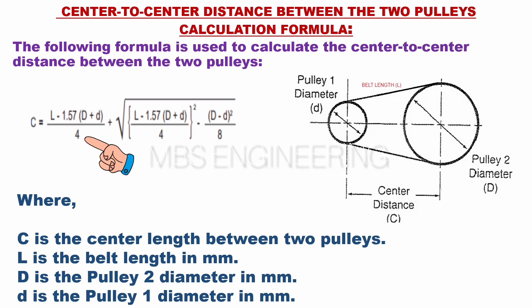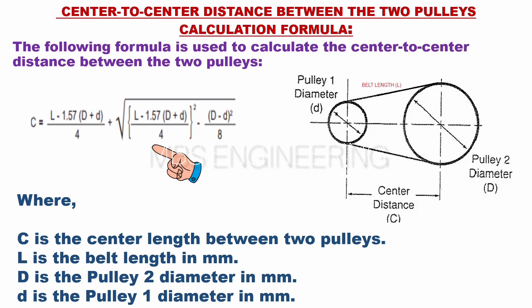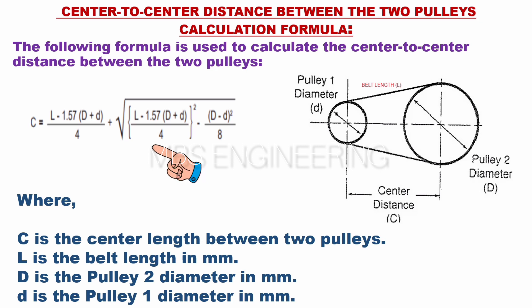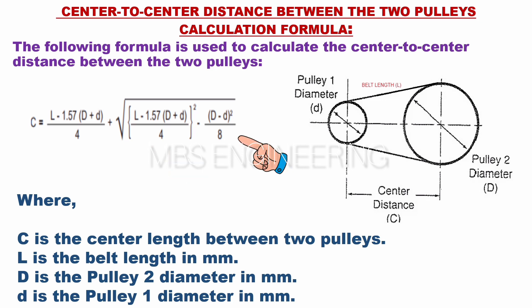plus the square root of L minus 1.57 multiplied by D plus d, and the obtained value divided by 4, and the further obtained value whole squared, minus D minus d, and that obtained value whole squared, further divided by 8.